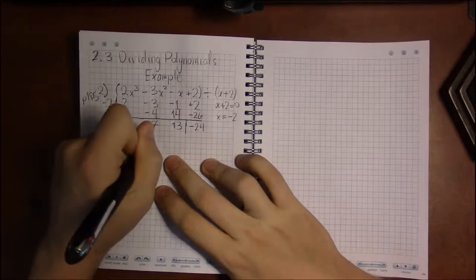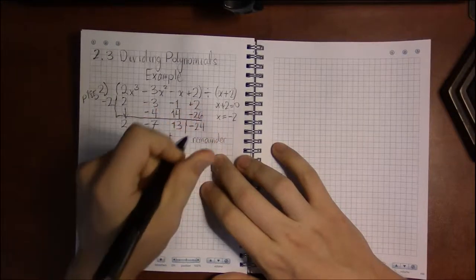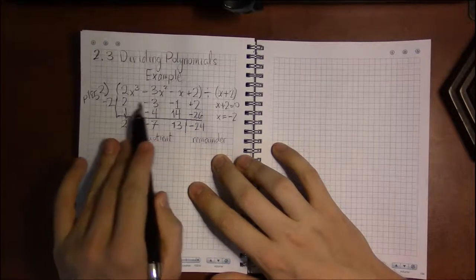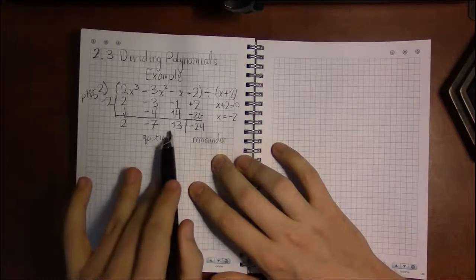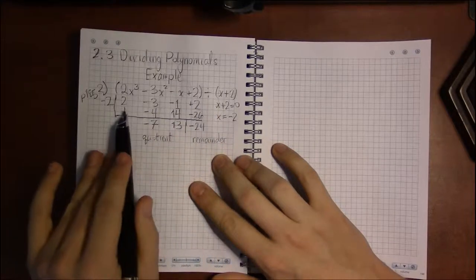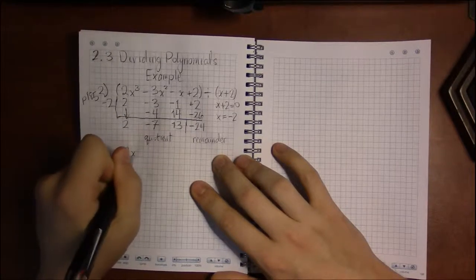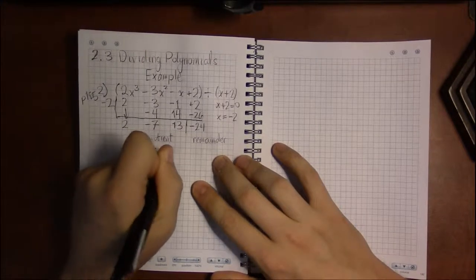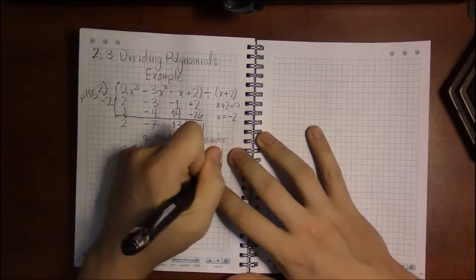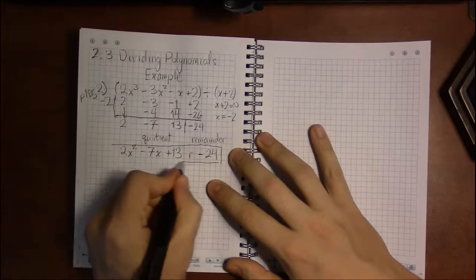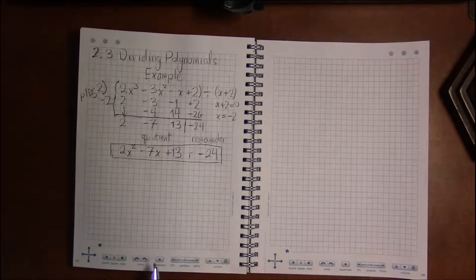The quotient is read from those coefficients in order — but when you do synthetic division, you drop a degree. So it's not x cubed but x squared. The quotient is 2x squared minus 7x plus 13, and the remainder is minus 24. That's the quotient and remainder when you divide 2x cubed minus 3x squared minus x plus 2 by x plus 2.